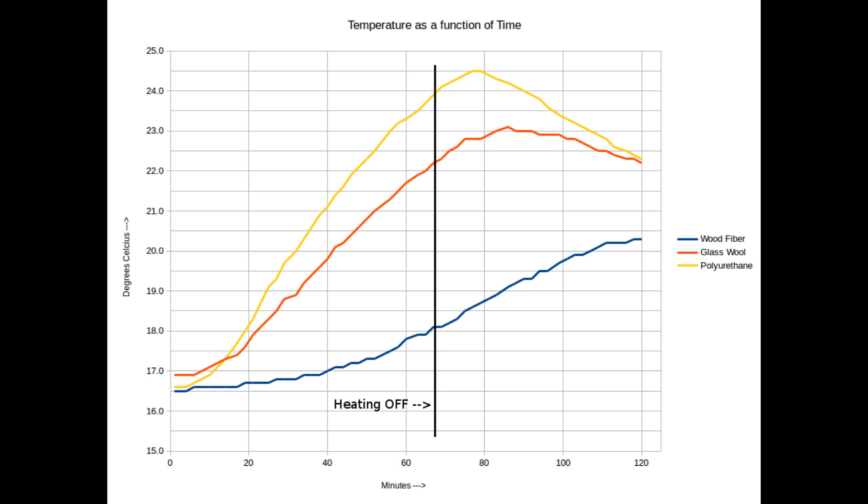One surprising thing is that the polyurethane graph goes up fastest. So you would think that with this low lambda value, polyurethane would be the best insulator and the temperature would go up not so fast. But no, actually the temperature in the polyurethane house goes up fastest.